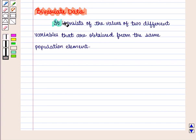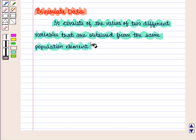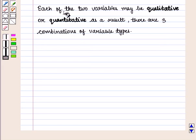It consists of the values of two different variables that are obtained from the same population element. Each of the two variables may be qualitative or quantitative.